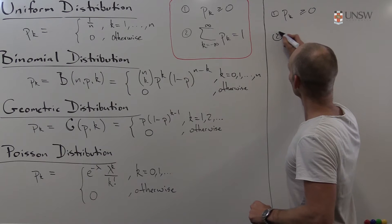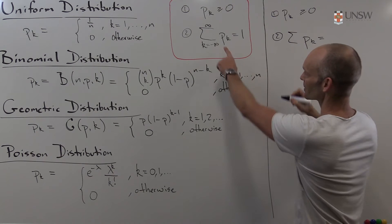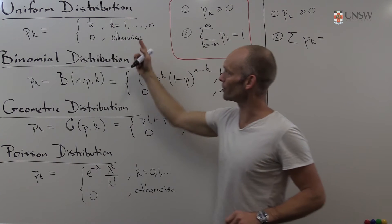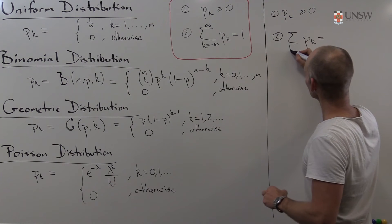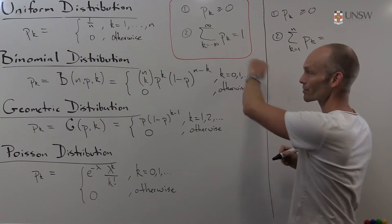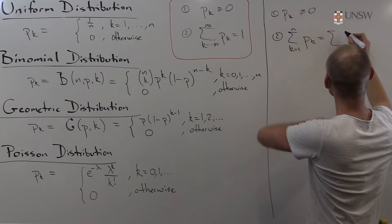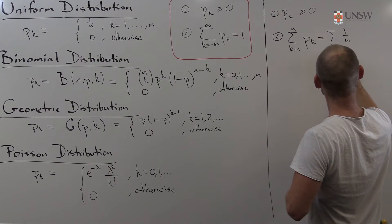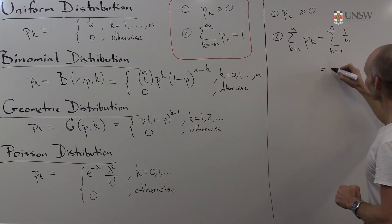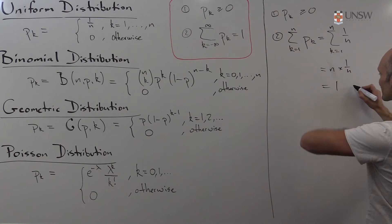For the second condition, when we take the sum over all p(k)'s, it's basically just a whole lot of zeros added together, except for the terms where k goes from 1 to n, each contributing 1 over n. We have n terms, each equal to 1 over n, so this is equal to 1.